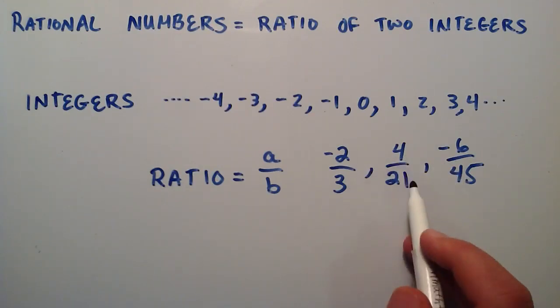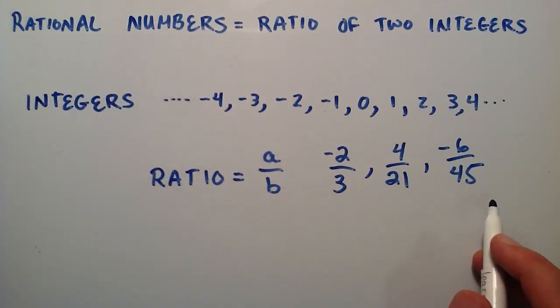You can do this with any two integers you'd like, and you'll make a rational number. So that's what a rational number is, but there's one other thing I wanted to point out before I finish this.